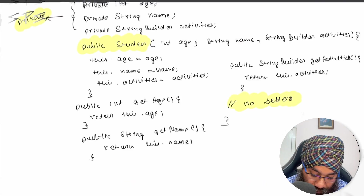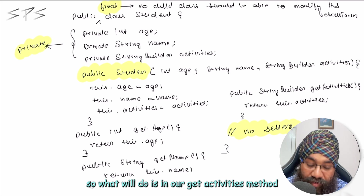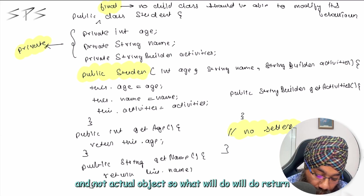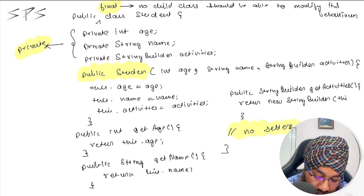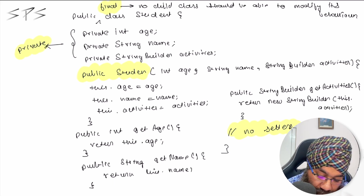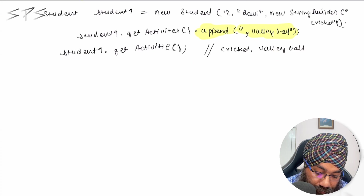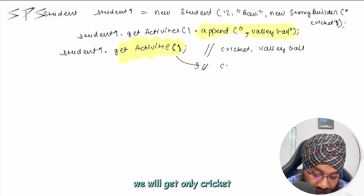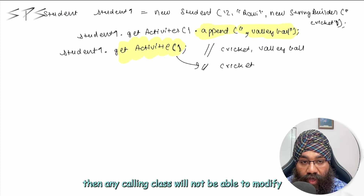So in order to fix this, what we need to do is modify our getActivities method. In our getActivities method we will return a copy of the activities object and not the actual object. So we do: return new StringBuilder(this.activities). We return a copy of the activities object, not the actual one. Then if we call student1.getActivities(), we will get only cricket — we will not get cricket and volleyball. Any calling class will not be able to modify our student property.